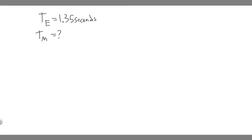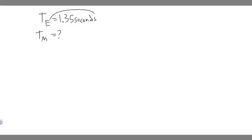In this problem we're told the pendulum has a period of 1.35 seconds on Earth. What is its period on Mars, where the acceleration of gravity is about 0.37 that on Earth? T_E stands for the period on Earth, which is 1.35 seconds, and T_M is the period on Mars, which we're trying to solve for.